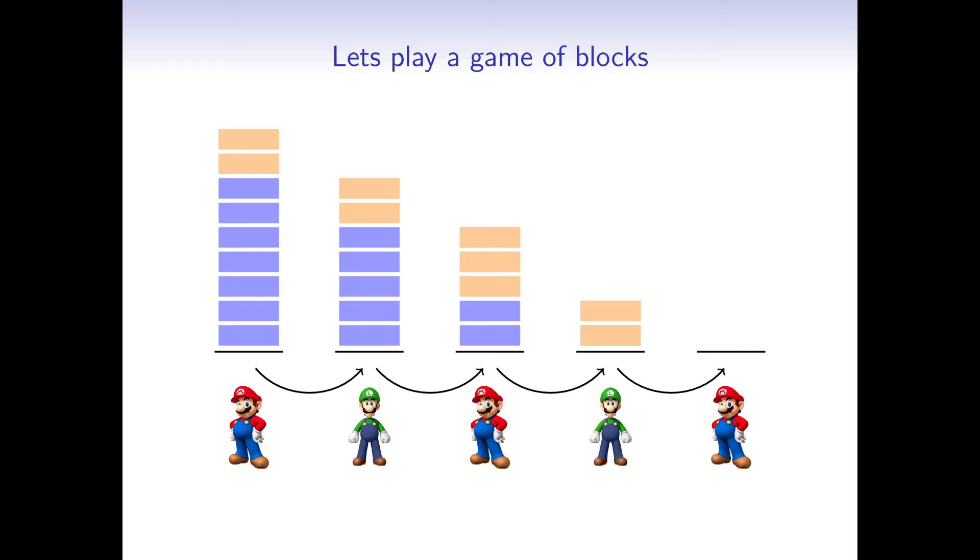What we want to find out is the following. Is there an optimal strategy for the game? And if so, what is it? Could he have also won the game when Luigi played optimally? To answer this, I want to define a certain category of games. Namely the impartial combinatorial games.